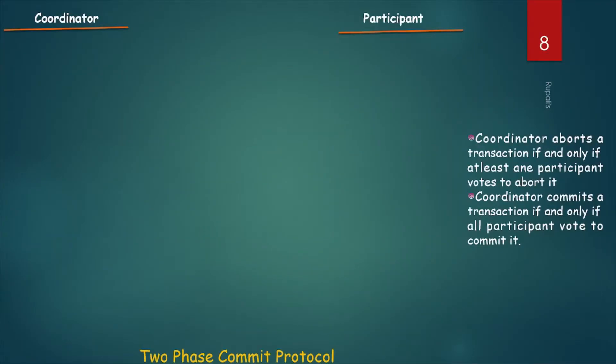Before learning the diagram, we will discuss two key points. First: the coordinator aborts the transaction if and only if at least one participant votes to abort it. Second: the coordinator commits the transaction if and only if all participants vote to commit it.